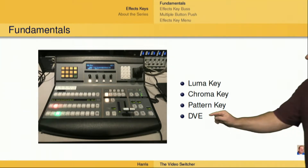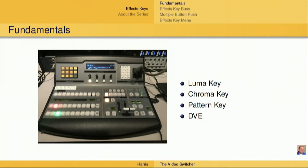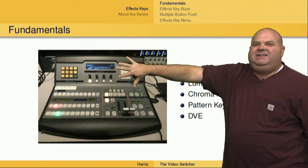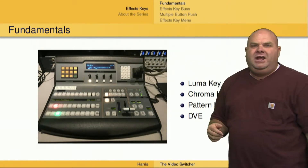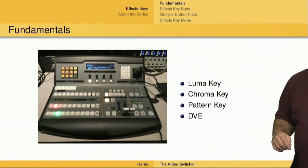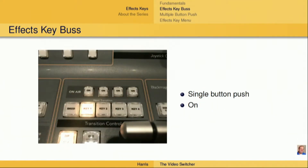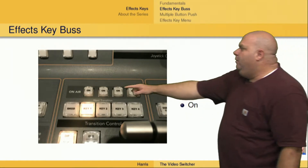And lastly, we have a DVE key. A DVE key allows us to do things like compress the foreground part of an image and place it on top of a background image — you might think of it as something like a picture in picture. We're not talking about how those keyers are set up; we are talking about how to bring those keyers live in this video, and you'll have to consult the other videos on how to set up those specific sorts of keys.